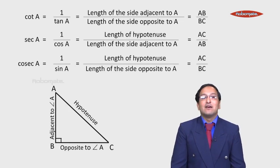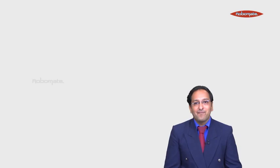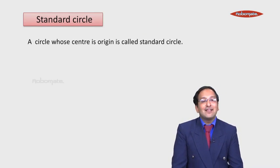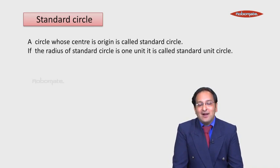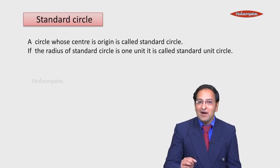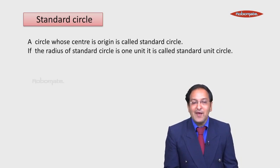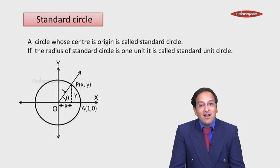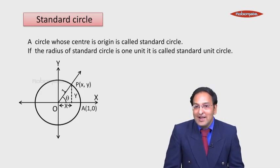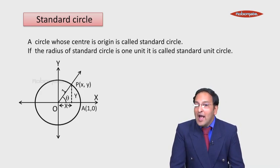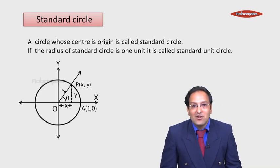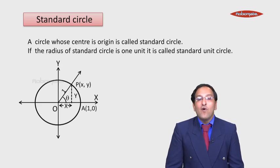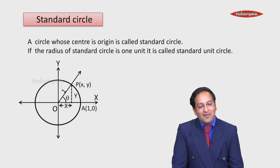These are my 6 basic trigonometric ratios. Next is the standard circle. A circle whose center is at the origin is called a standard circle. And if the radius of the standard circle is 1 unit, then it is called a standard unit circle. In the diagram, the radius is 1, the center is at the origin, point A is on the x-axis with coordinates (1, 0) since OA is the radius, and point B is on the circle with coordinates (x, y).